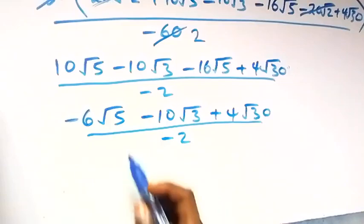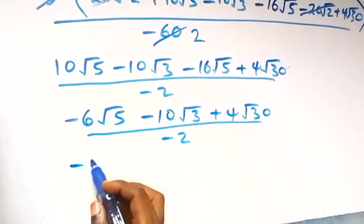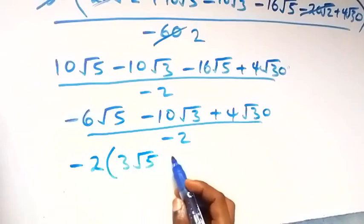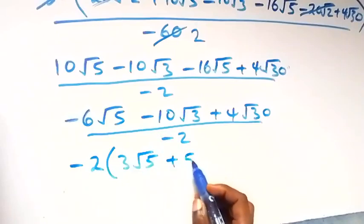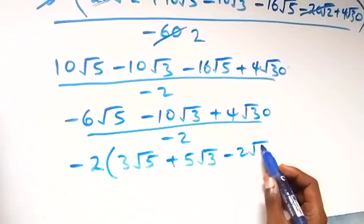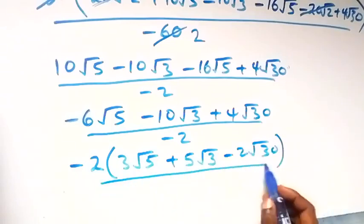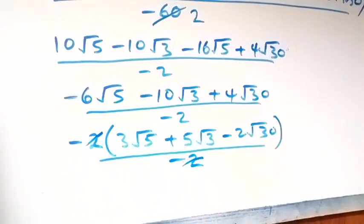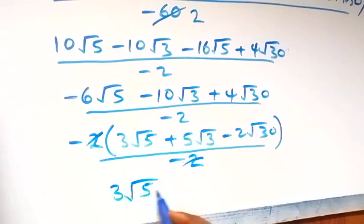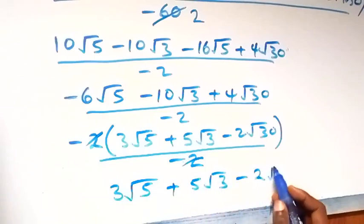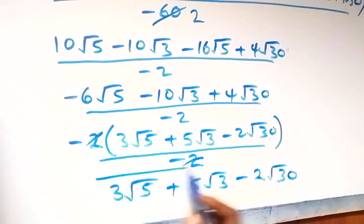Here we have minus 2 common in the numerator, so factor out minus 2: what's left is 3 root 5, plus 5 root 3, minus 2 root 30. Dividing by minus 2 cancels, and what we have left is 3 root 5 plus 5 root 3 minus 2 root 30, which is the simplified form of the given problem.